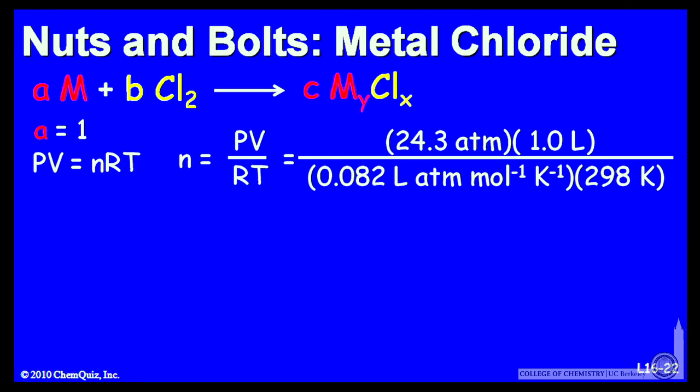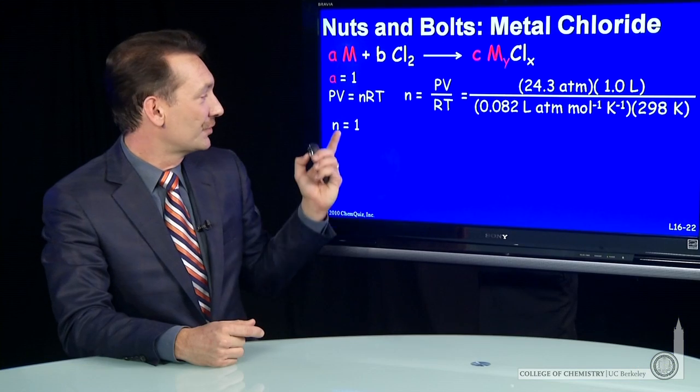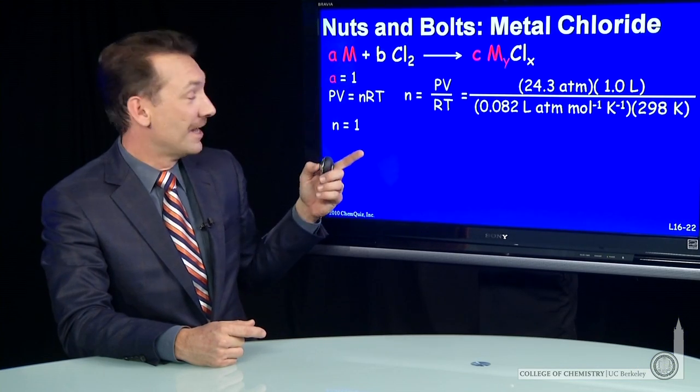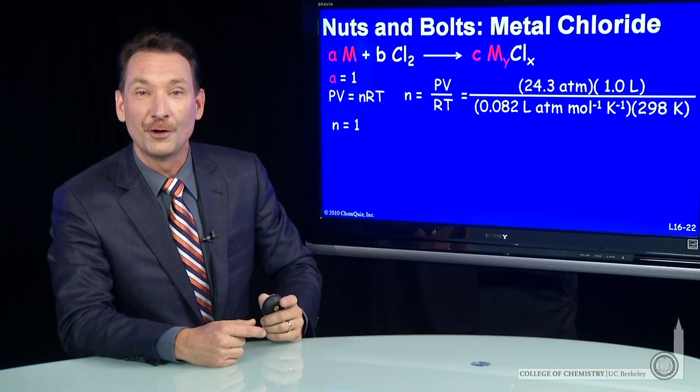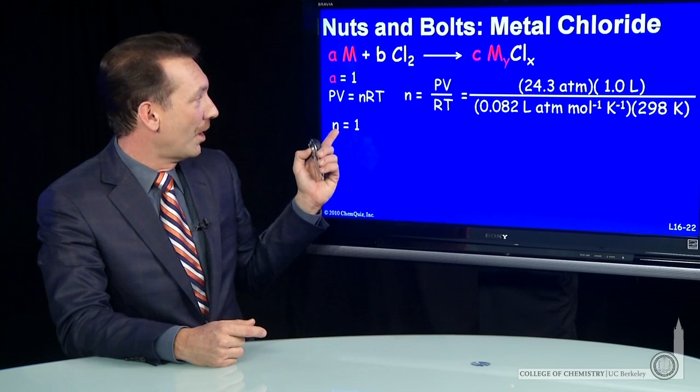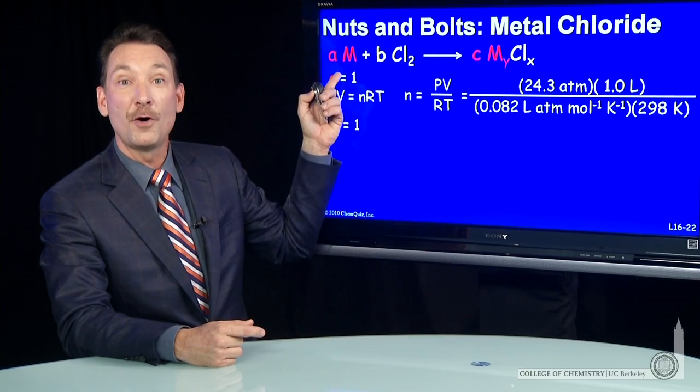I'll plug in those values: 24.3 atmospheres, a liter flask at 298 K, and the gas constant. Solving, that gives me one mole. So one mole of chlorine is consumed.